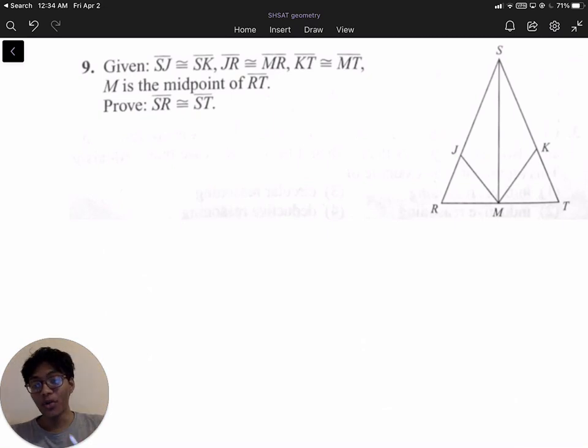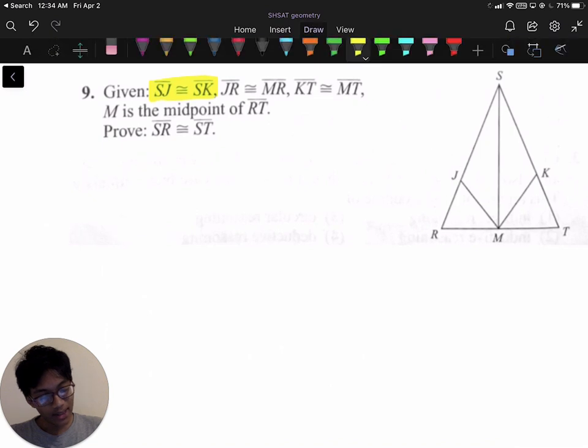What's up folks? This is your homework hint. Hopefully it helps you out because this one's a bit tricky. We're given that line segment SJ is congruent to SK, and we also know that JR is congruent to MR and that KT is congruent to MT. And we finally know that M is the midpoint of RT.